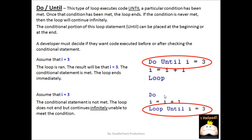We have something similar with the do-until loop. This type of loop executes code until a particular condition has been met — and that's key. We run into the same issue here with placement of our until condition. Once that condition has been met, the loop ends. If the condition is never met, then the loop will continue infinitely.